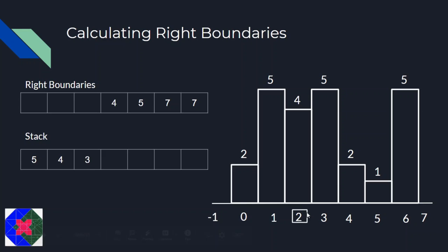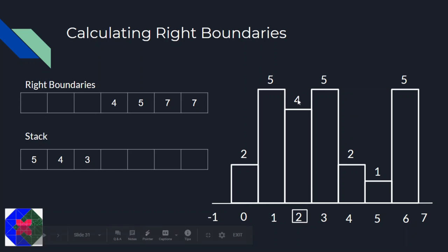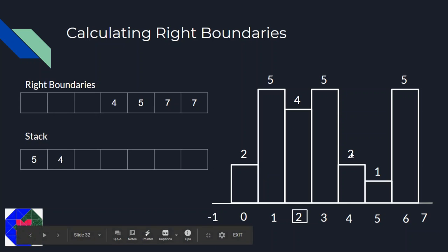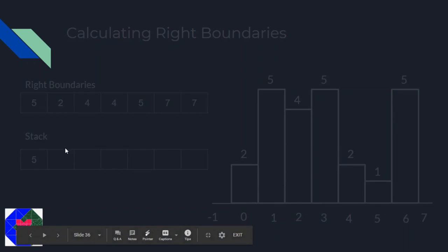For index 2 with height 4: we see index 3 on the stack corresponds to height 5, which is greater than 4, so we pop. Then index 4 on the stack corresponds to height 2, which is lesser than 4, so we stop. We write 4 as the right boundary and push index 2 into the stack. Similarly you can compute right boundaries for indices 0 and 1.